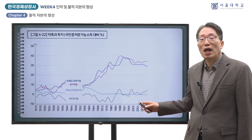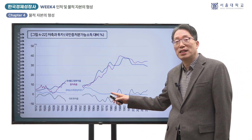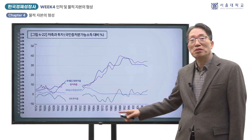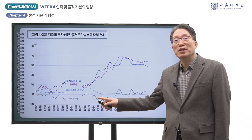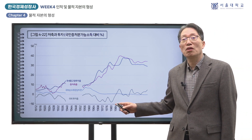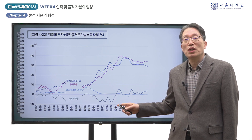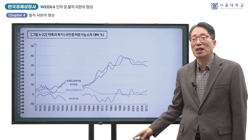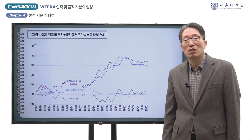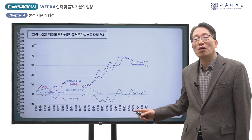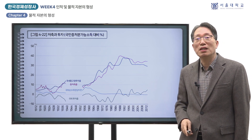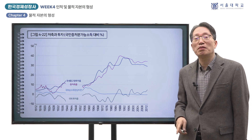그래프에 국외순수취 경상이전이라는 항목을 제시했는데, 이것이 플러스인 것은 원조가 유입되었음을 말합니다. 예컨대 1957년에는 원조가 국민총처분가능소득의 8%에 달할 정도로 큰 규모였습니다. 1950년대와 60년대에 원조가 없었다면 국내 저축이나 투자도 그만큼 줄어들었을 것입니다. 한국의 투자 재원에는 해외저축이나 원조의 비중이 높았지만, 60년대 이후 투자율의 급상승은 역시 국내 저축률의 뒷받침을 통해 가능했다는 점을 주목할 필요가 있습니다.